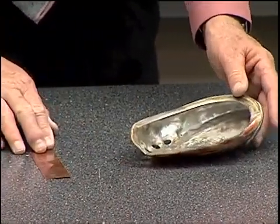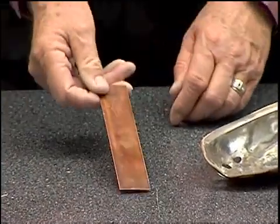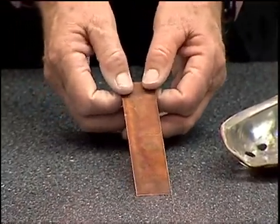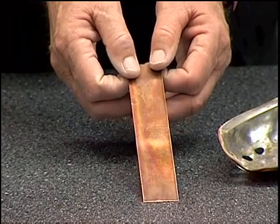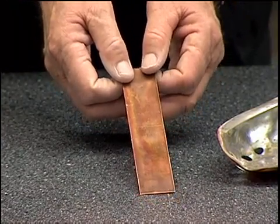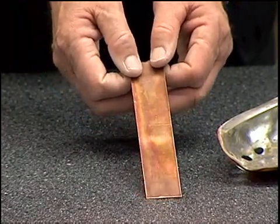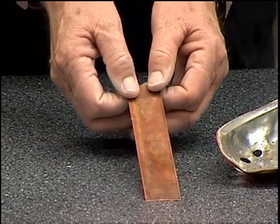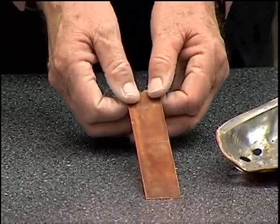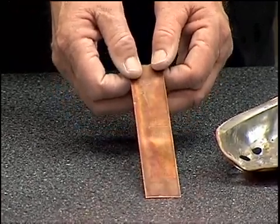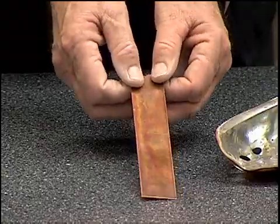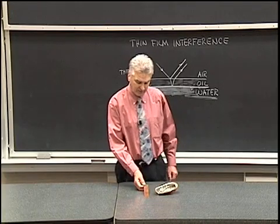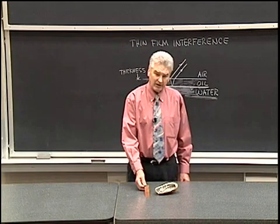Here's another one where we have some oxide on a piece of copper, and we see that thin film of oxide will reflect light in such a way that some colors will be reflected in some directions, other colors in other directions, depending upon the thickness of the film and the angle that we view that from. There are other ways that we can demonstrate thin film interference as well.